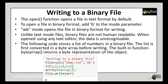Writing to a binary file: the open function opens a file in text format by default. So if we want to open the file in binary format, we need to add 'b' to the mode parameter. 'wb' mode opens the file in binary format for writing. Unlike text mode files, binary files are not human readable, so when you open that binary file, you won't be able to see the content — the data is unrecognizable.